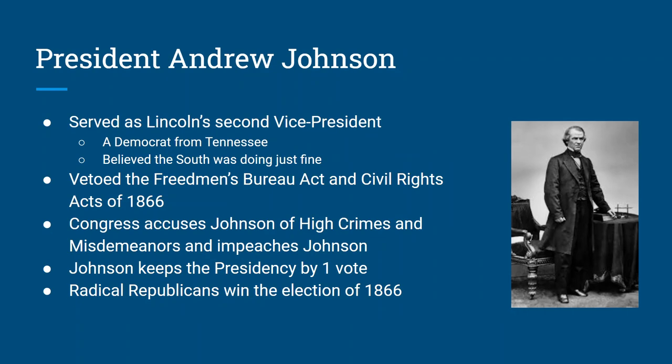President Andrew Johnson became president after Abraham Lincoln was assassinated in April of 1865. He was Lincoln's second vice president — when Lincoln was re-elected he purposely chose Andrew Johnson, which was a surprising pick because Johnson was a Democrat from Tennessee and he thought the South was right. Lincoln didn't run in 1864 as a Republican; he ran as a Unionist because he wanted to repair the country. He chose Andrew Johnson hoping this would help the South see that they were going to be okay.